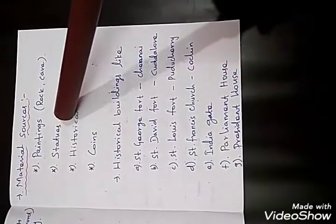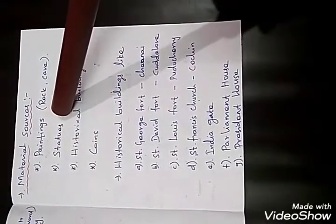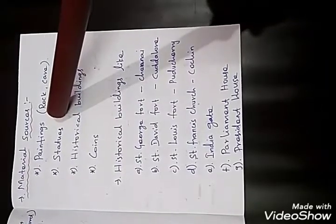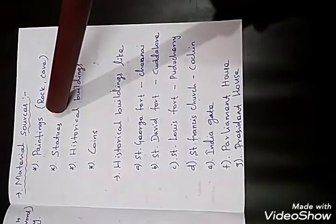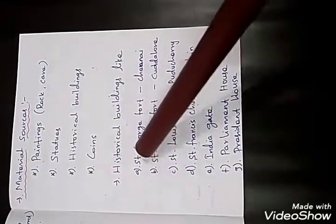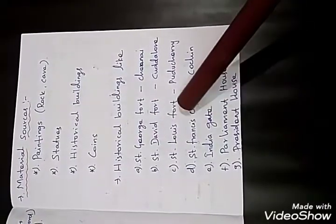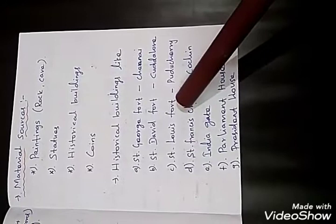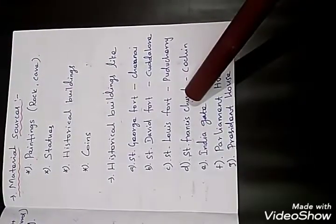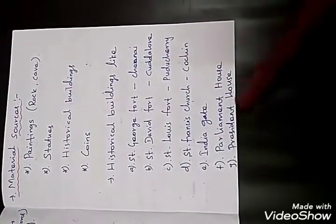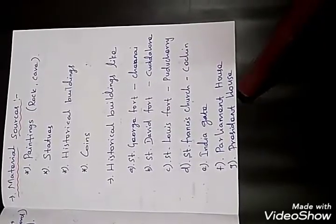The next material source is statues. Then historical buildings — examples include St. George Fort, St. David Fort, St. Louis Fort, St. Francis Church, India Gate, Parliament House, and the President's House.